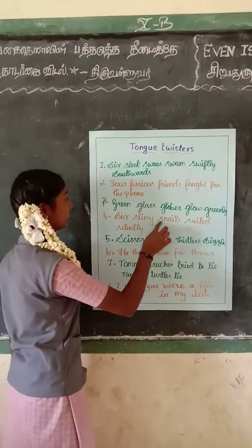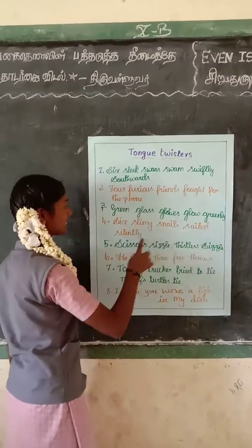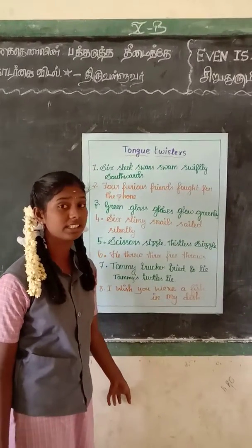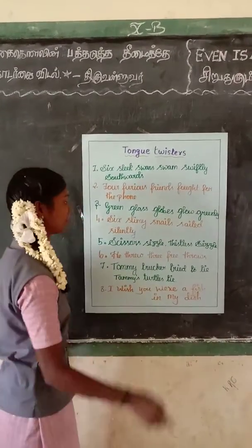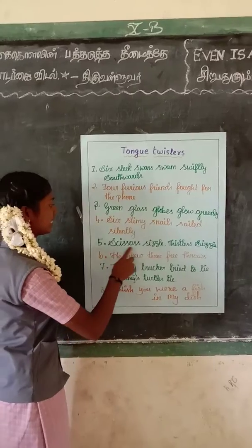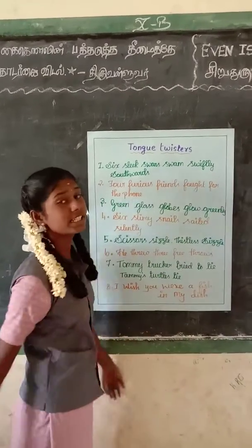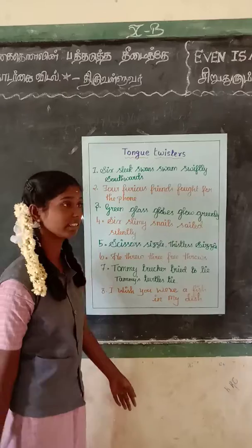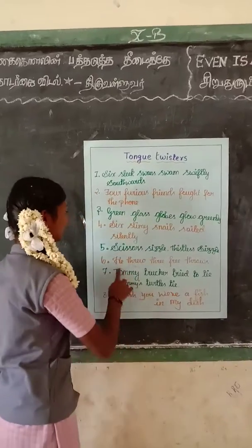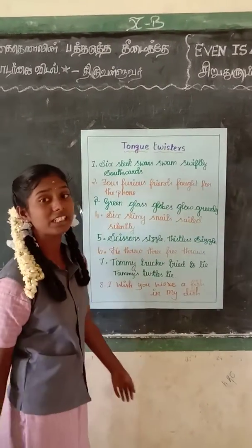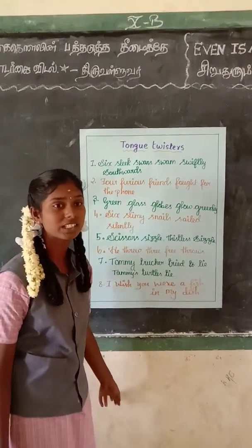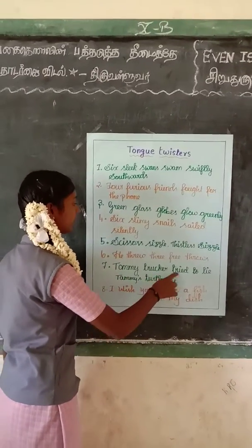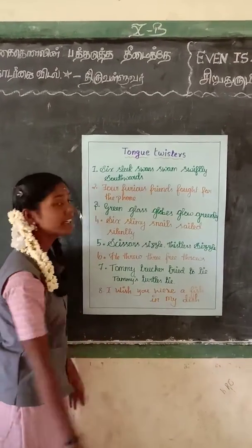Six slim sailboats sailed silently. Scissors whistle, scissors whistle, scissors. Kim threw three free throws. Tommy Tucker tried to tie Tommy Turtle's tie.